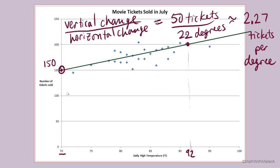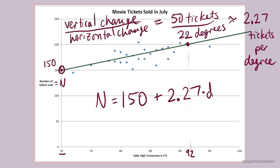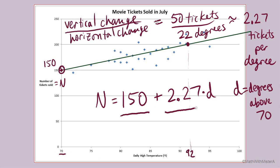Now we can create the linear equation that represents that line. We'll use the variable n to represent the number of movie tickets sold. We have a starting amount of 150 tickets from our vertical intercept, and a constant increase of 2.27 tickets per degree. We multiply 2.27 by the number of degrees above 70, so D represents how many degrees above 70 the temperature is. Our 150 movie tickets are already accounted for when the temperature is at 70 degrees, so we only increase ticket count by 2.27 once temperatures climb above 70.